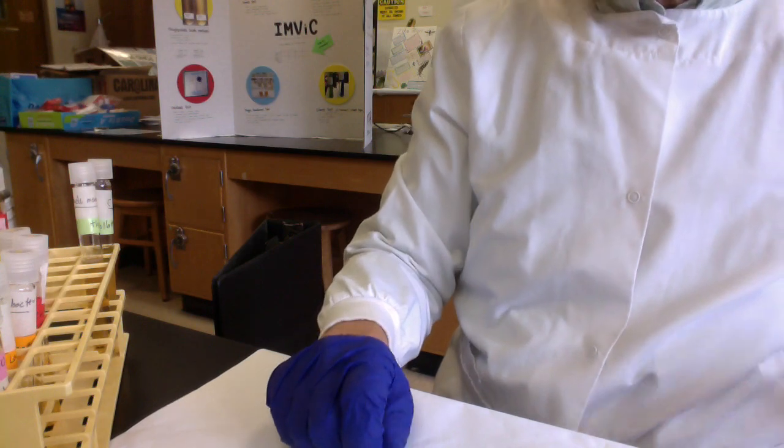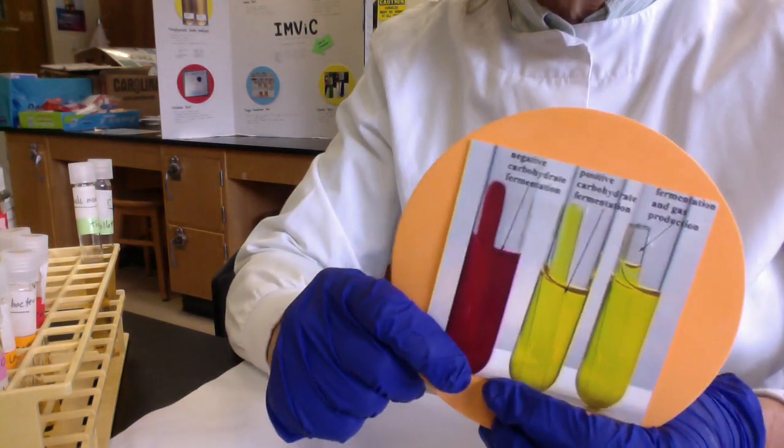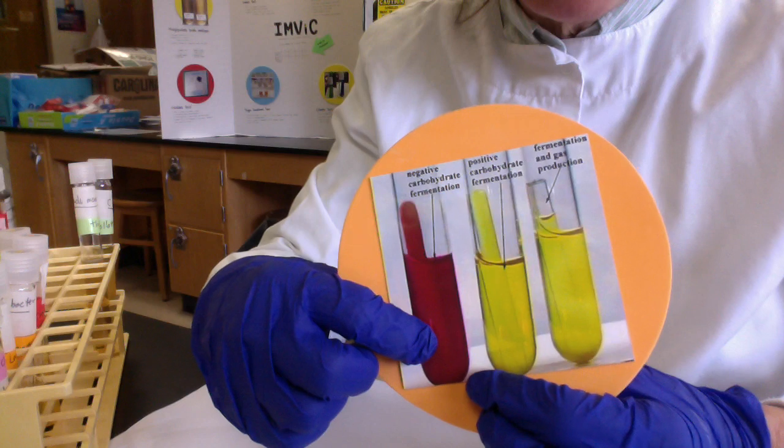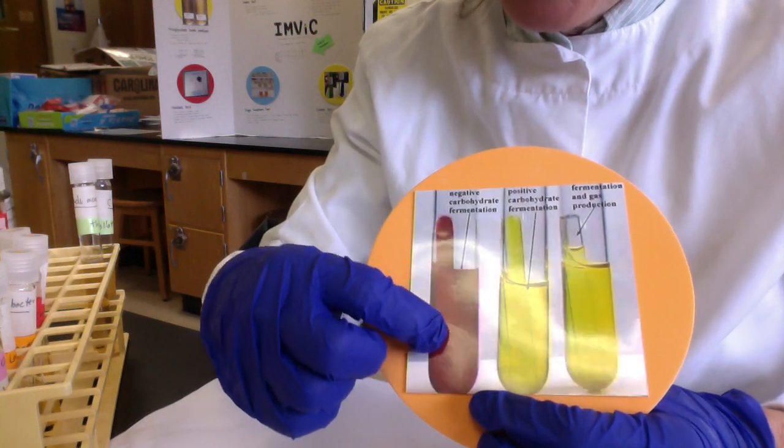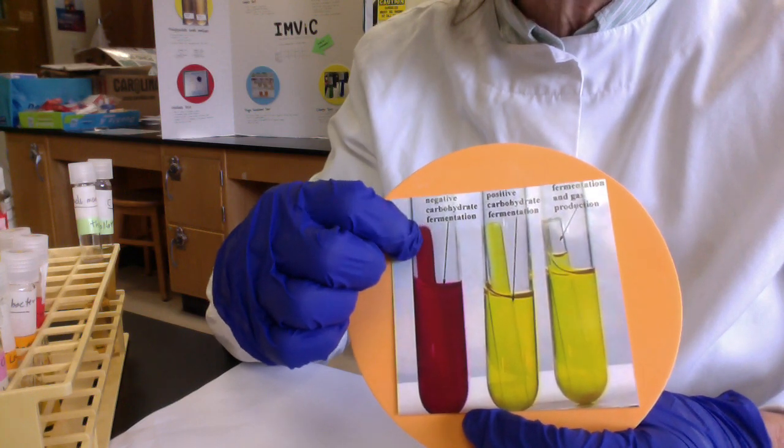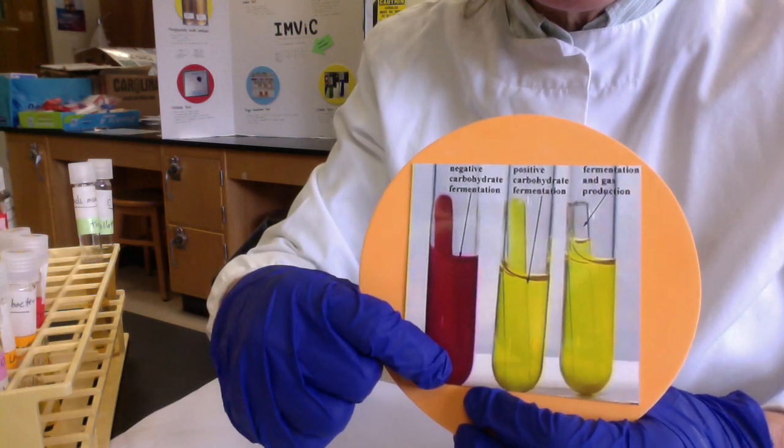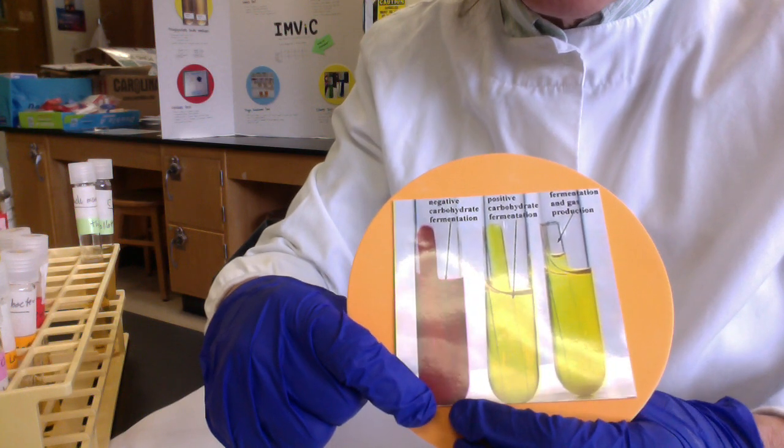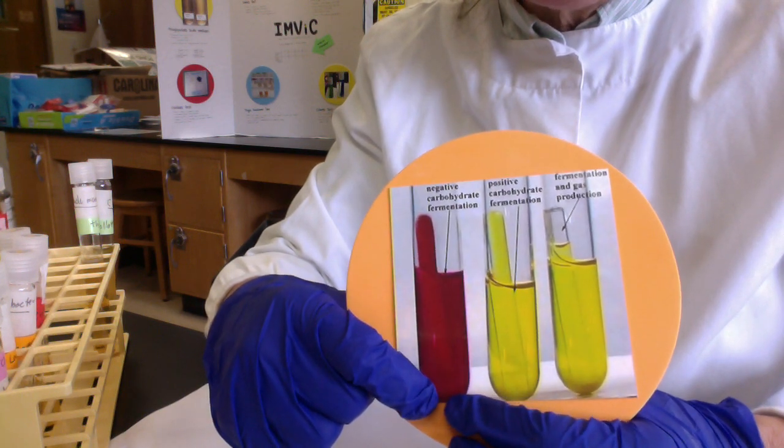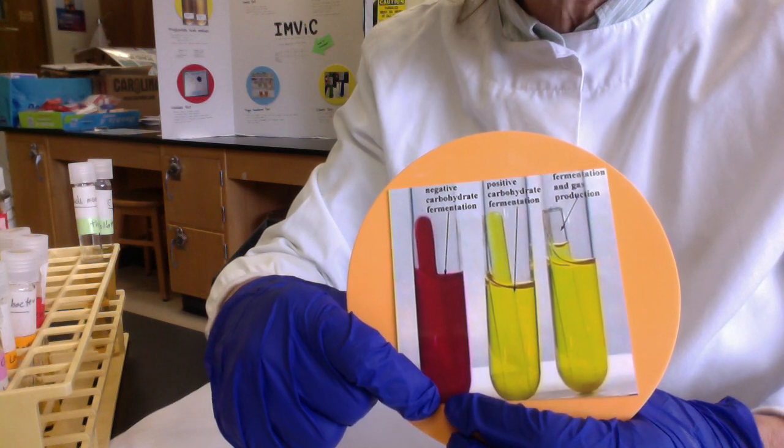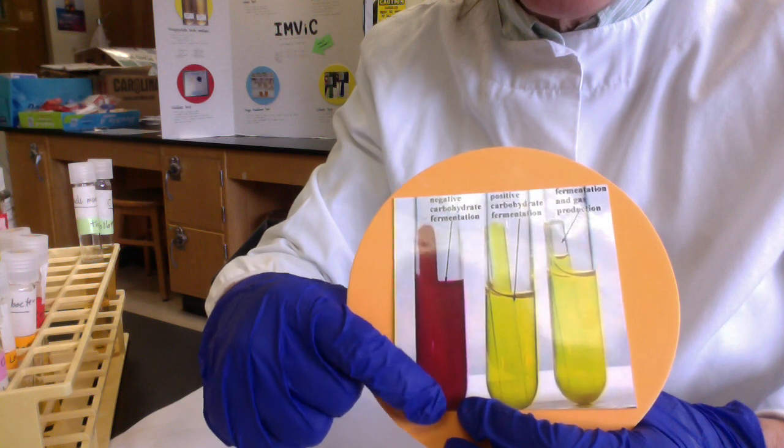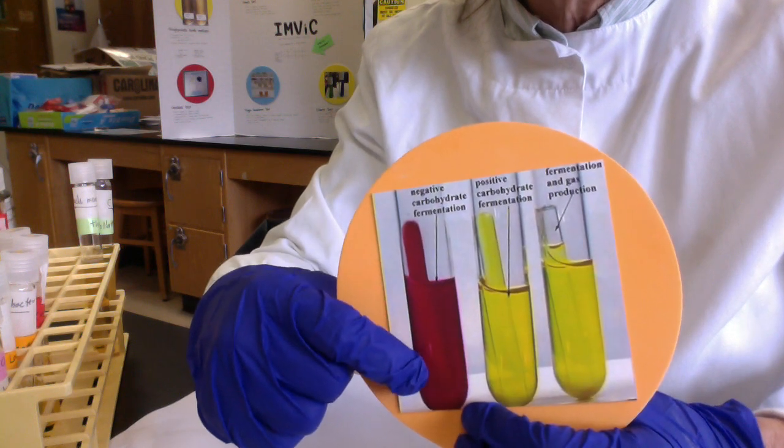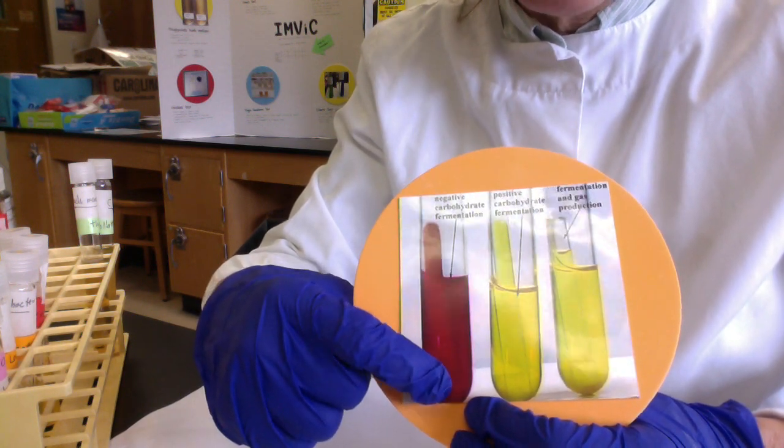Pseudomonas is a strict obligate aerobe. We would expect an alkaline result, scored K for alkaline, meaning the sugar wasn't fermented. With no sugar fermentation, you should be negative for gas. Pseudomonas can't carry out fermentation—it has to carry out aerobic respiration. It couldn't ferment the sugar, so it had to use amino acids, releasing ammonia, which gave the alkaline reaction. You get this beautiful fuchsia color with phenol red. This is negative for sugar fermentation.